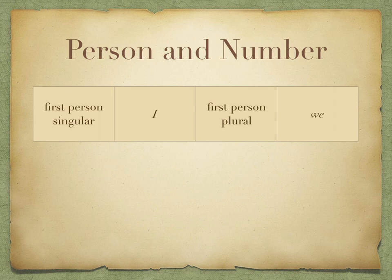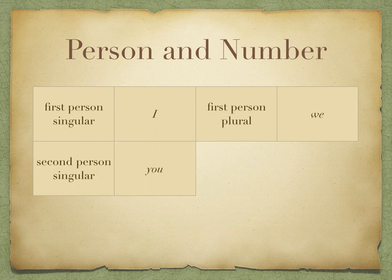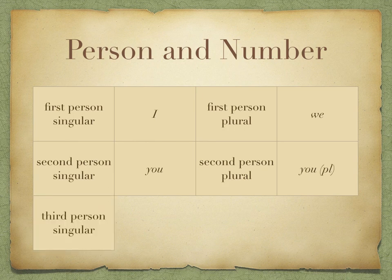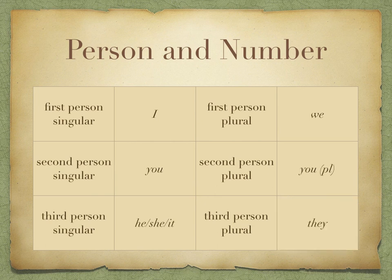Second person is used to talk to someone else. In English, we use the pronoun 'you' for both singular and plural, but there may be different forms of this 'you' plural pronoun in different dialects of English — you might have heard 'y'all', 'you guys', 'yous', 'you fellas', and so on. Third person singular is used to talk about one person — either he, she, or it — and third person plural is used to talk about a group of people, and that is 'they'.